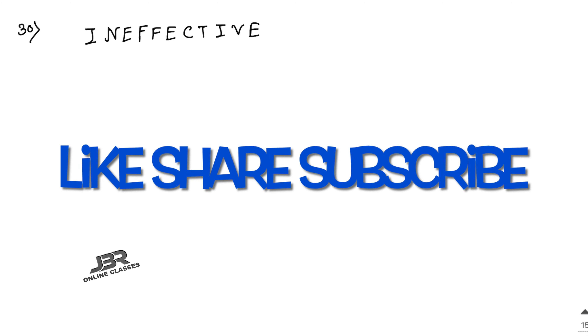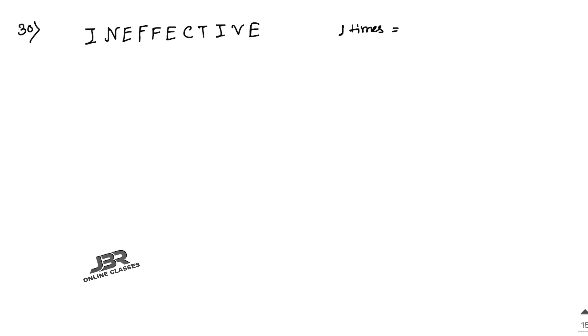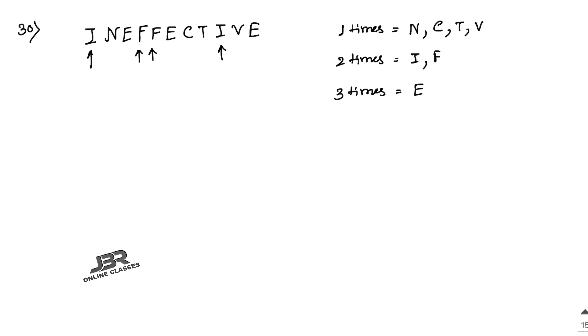Now sum number 30 — this is the last sum for this video. If you like my video, please share and subscribe. The word is INEFFECTIVE. It has 11 letters total. Letters appearing once: N, C, T, V. Letters appearing twice: I and F. Letters appearing three times: E. We need to form 4-letter words and consider different cases.